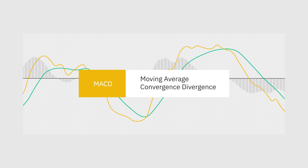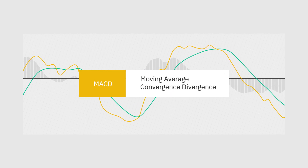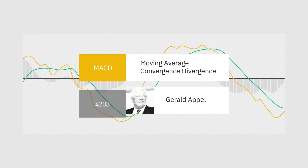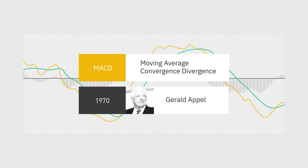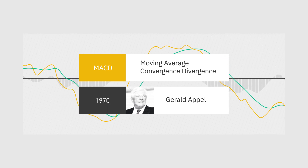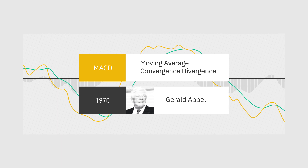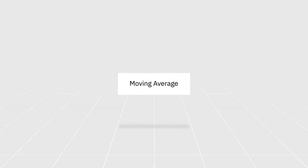MACD stands for Moving Average Convergence Divergence. Gerald Apple developed it in the late 1970s as a tool that utilizes moving averages to determine the momentum of an asset. Before diving into the mechanisms of MACD, it is essential to understand the concept of moving averages.